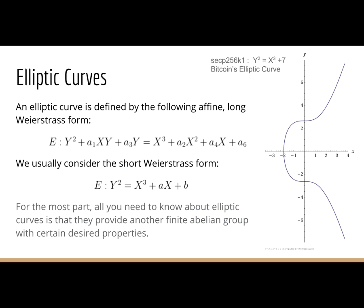Changing gears a little bit, we're going to briefly talk about elliptic curves. For the most part, you don't really need to know exactly what an elliptic curve is or how it's used, other than that it makes for a really good finite field on which you can pose a discrete logarithm problem, which we'll then use in digital signatures. You can define the elliptic curve by this equation in affine form, but we usually consider the shorter version. If you plot this on the real number plane, you get this cool squiggly thing reflected across the x-axis.